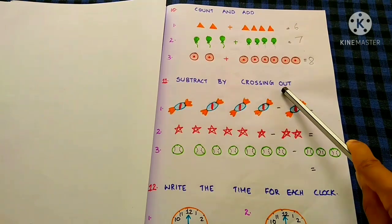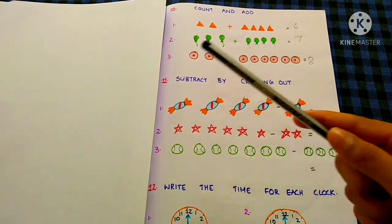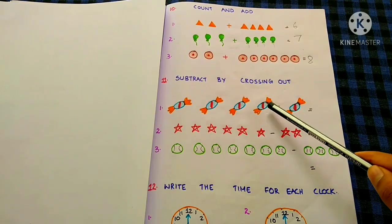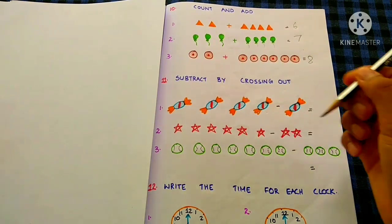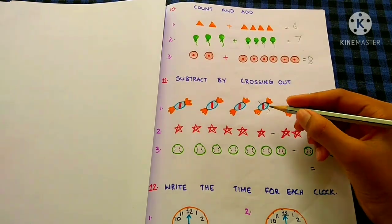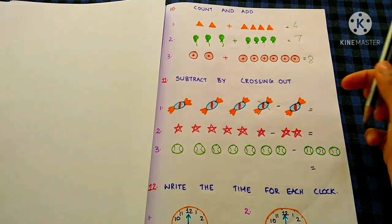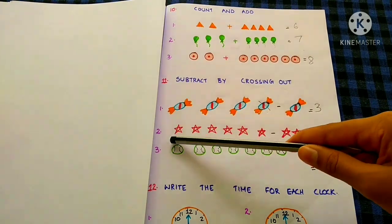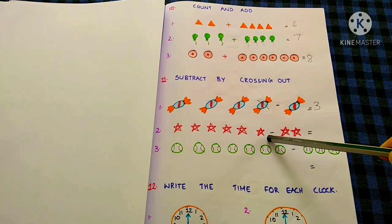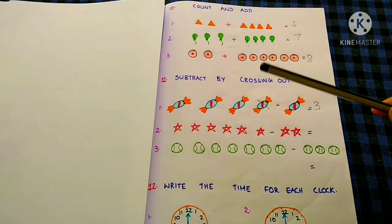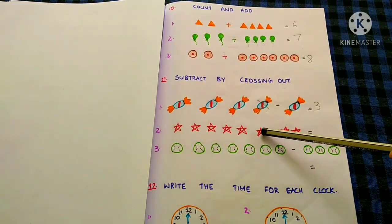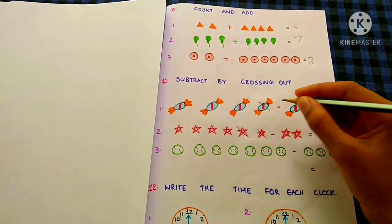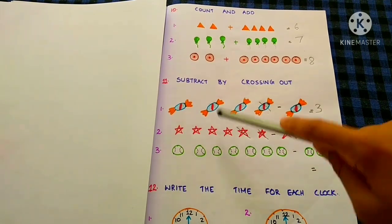Subtract by crossing out. 1, 2, 3, 4, minus 1. We have to cross 1 from this. So the answer is 1, 2, 3. 1, 2, 3, 4, 5, 6, minus 1, 2. We have to cross 2 from this. 1, 2. So the answer is 1, 2, 3, 4.